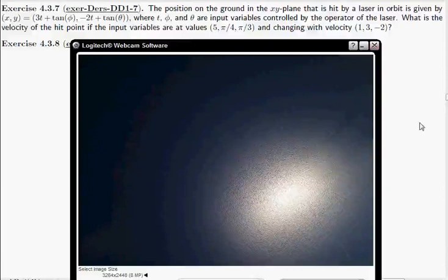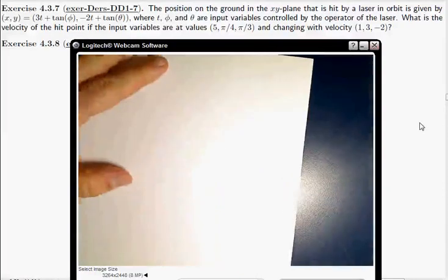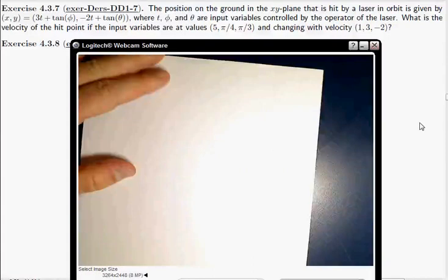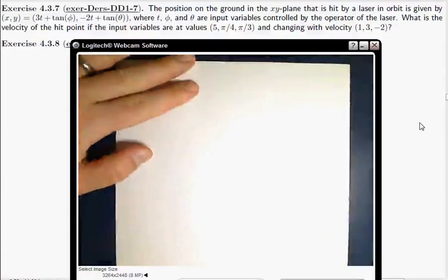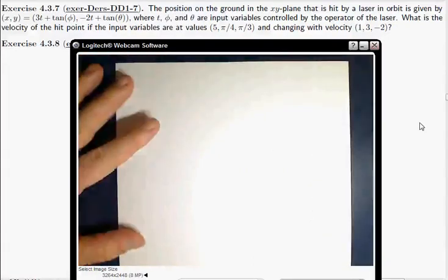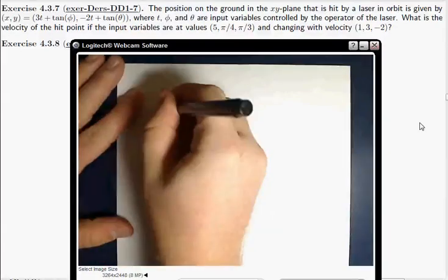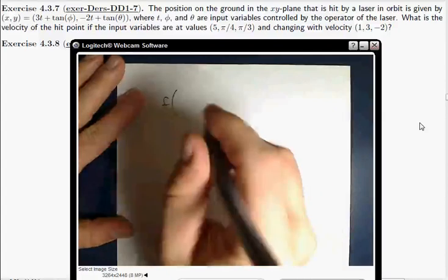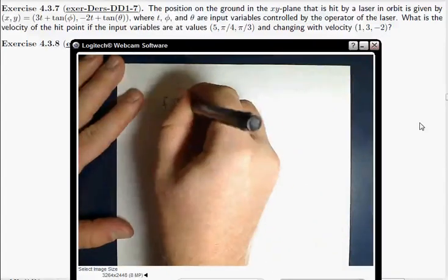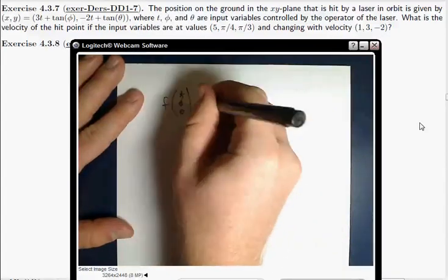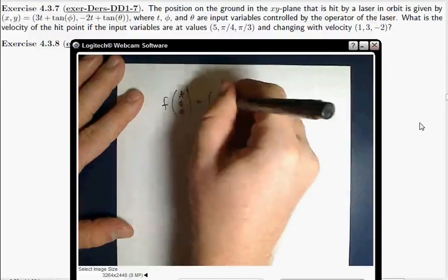All right, so this problem, all this discussion about we've got some laser and there's input variables controlled by the operator of the laser, all that stuff is just observing that this is a real-world situation, but ultimately what the problem is asking is we've got some function where the input variables are t and phi and theta, and the output is x, y.